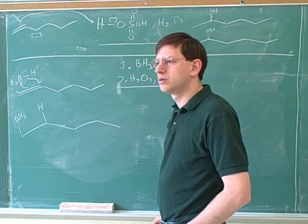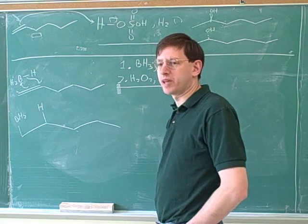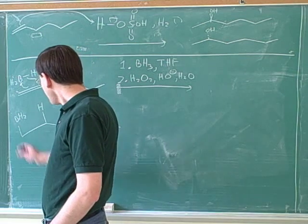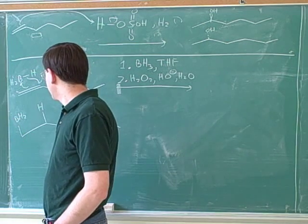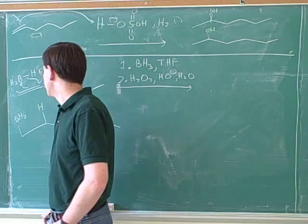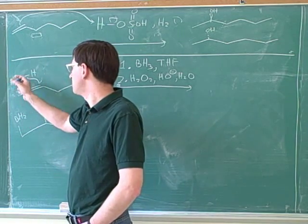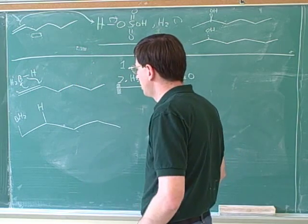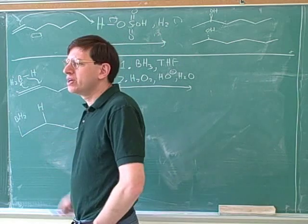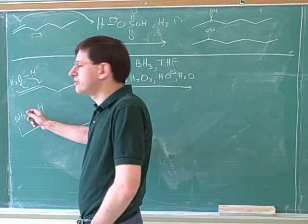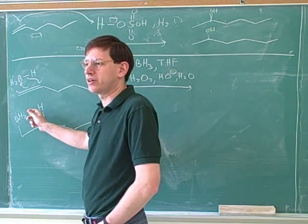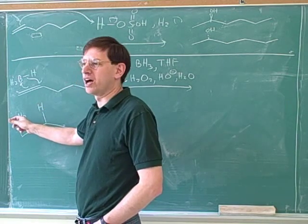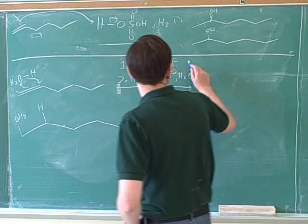We're not forming any stereocenters, so we don't need wedges or dashes here. Here's the boron on the less substituted carbon where it arrived because there's less steric hindrance. Notice there's no carbocations in this mechanism because the B and the H both added at the same time. Now, what was the name of this first step? This first step is called hydroboration. That's a very logical name because we're adding hydro, the hydrogen, and boron. So hydroboration is a logical name for this first step.